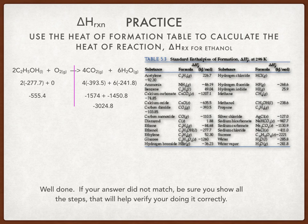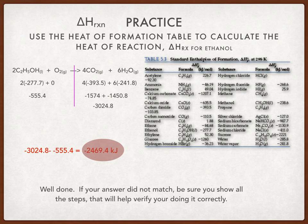Once you have the two individual numbers, take the product value of negative three zero two four point eight and subtract the reactants value of negative five fifty-five point four. When you do that you should end up with negative two four six nine point four kilojoules.